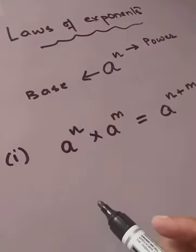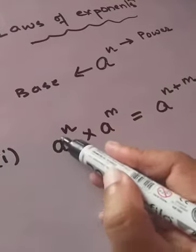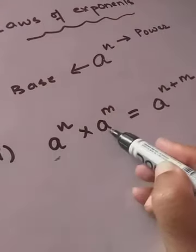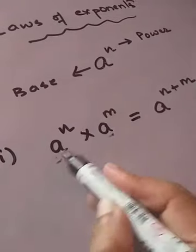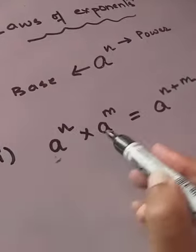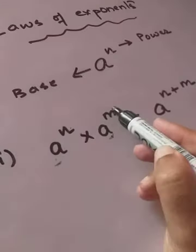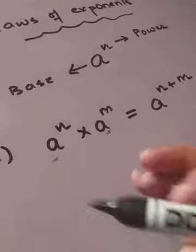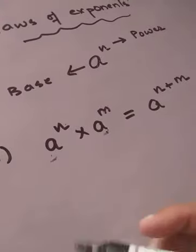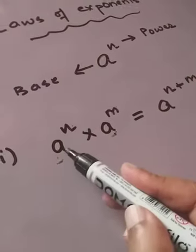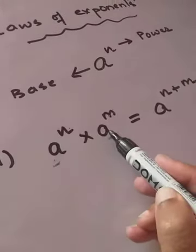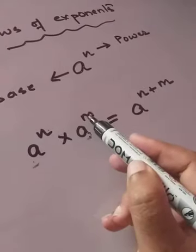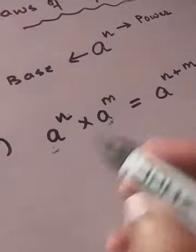The first law: when you see 'a to the power n' multiplied by 'a to the power m,' both terms carry the same base but different powers, with a multiplication sign between them. When the bases are same, in case of multiplication, we always add the powers.